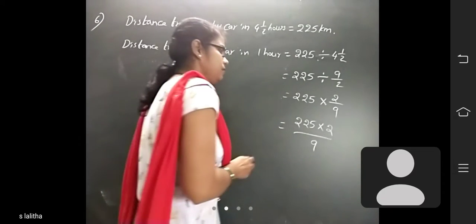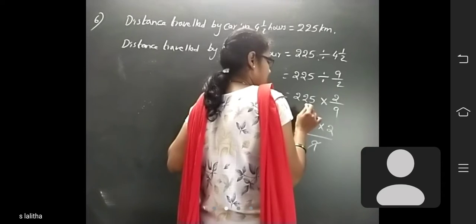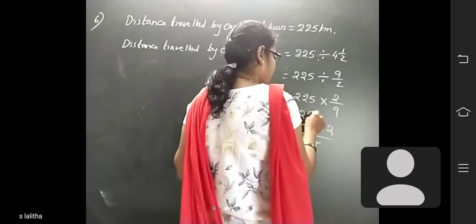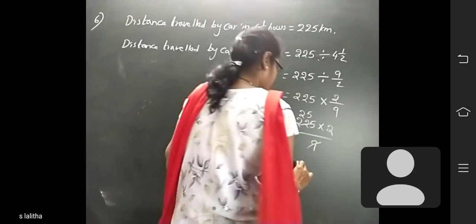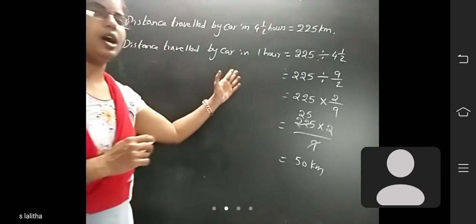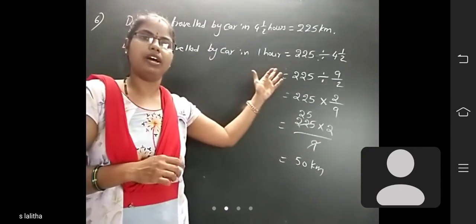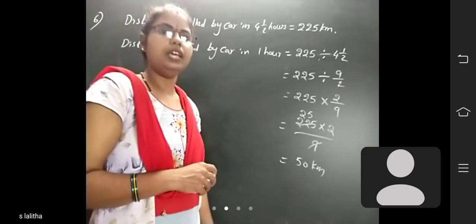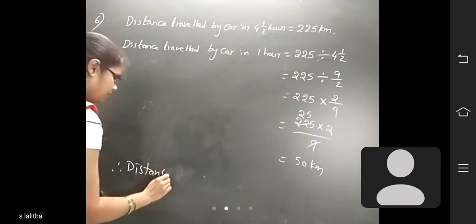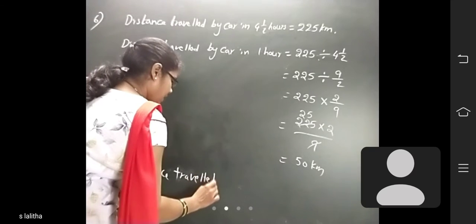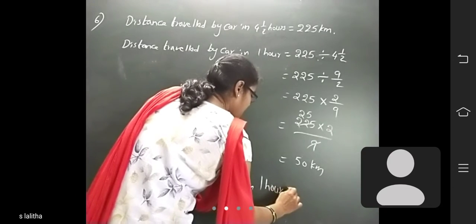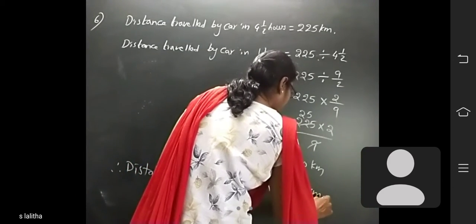Any calculation: 225 divided by 9 is 25, and 25 into 2 is 50 kilometres. So distance travelled by the car in one hour is equal to 50 kilometres. Therefore, distance travelled in one hour is equal to 50 kilometres.